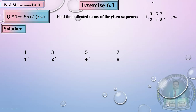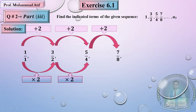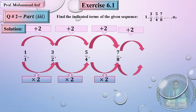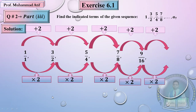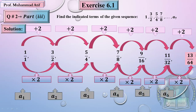This is a fraction sequence. Look: between 1 and 3 there is a difference of 2 in the numerator; between 3 and 5 another 2; then 5 and 7 — another 2. So the numerator is adding 2 each time. In the denominator: multiply by 2, then multiply by 2 again. So in the numerator, adding 2; in the denominator, multiplying by 2. Using this pattern, the 7th term is 13 over 64. You can write in words: numerator adds 2, denominator multiplies by 2.